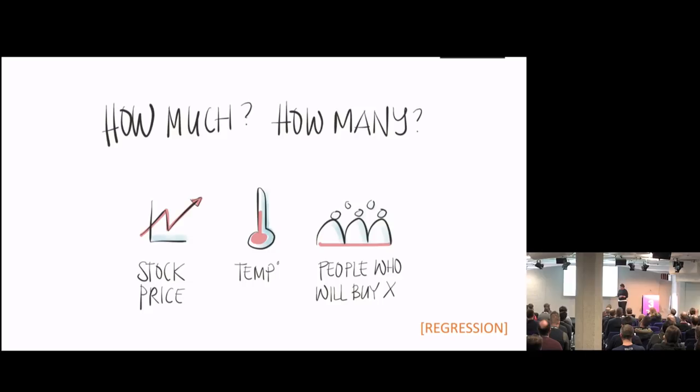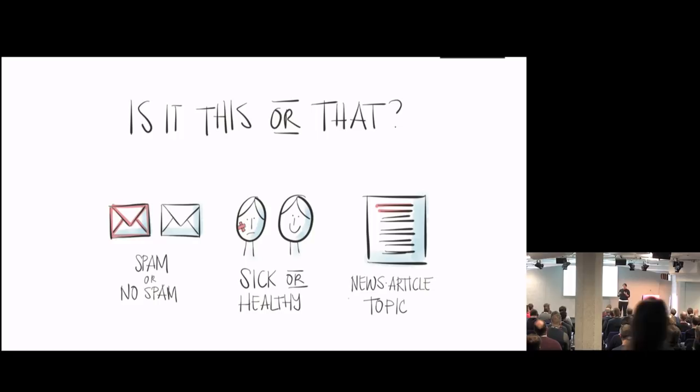The next type of question is 'is this or that?' — this is called classification. Given an email and how it looks, is it spam or ham? Given all these symptoms, is this person going to have diabetes or not? It can be two classes or multi-class — for example, looking at a news article and classifying it as music, technology, sports, or whatever. But it's still classification.